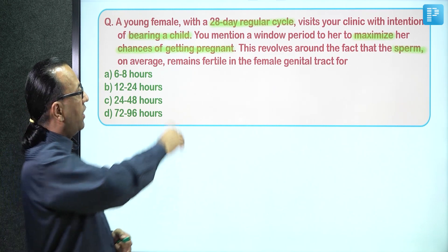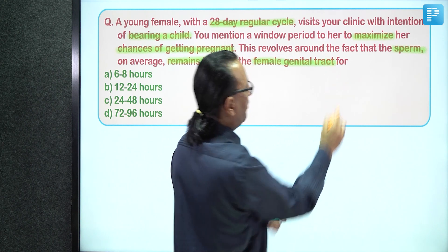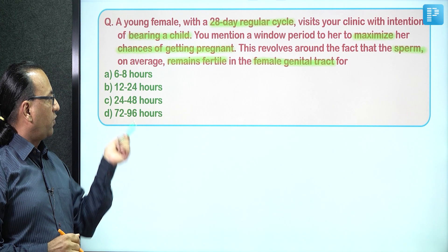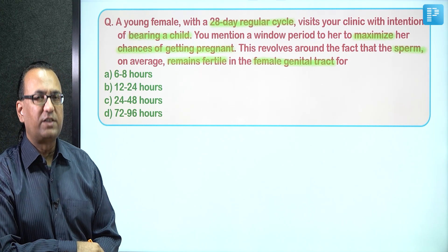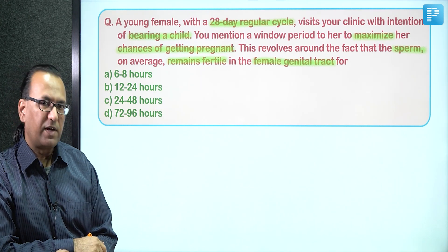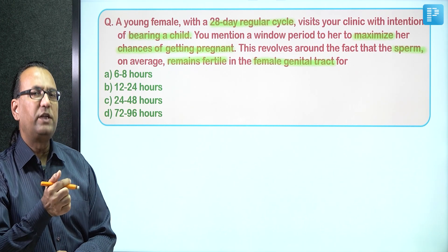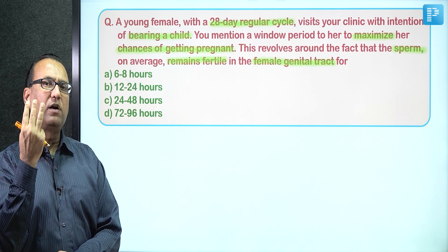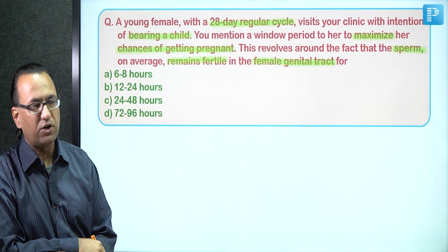The question asks how long sperms remain fertile after being ejaculated in the female genital tract. To guide this lady, we will give her an LH kit, and as the LH kit becomes positive she is advised to undergo copulation around the day of ovulation. Usually there are three days in the whole menstrual period which are the most fertile days.